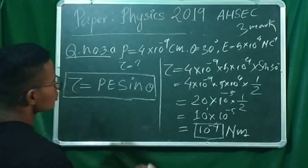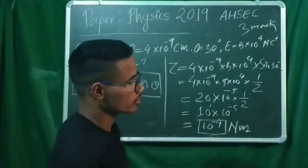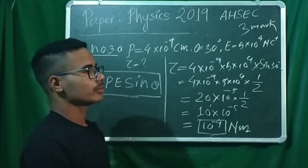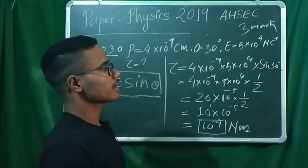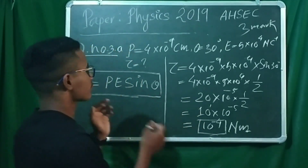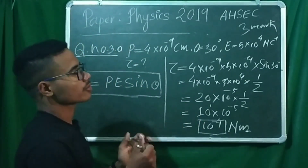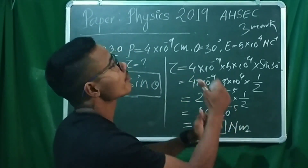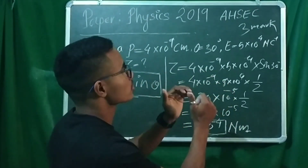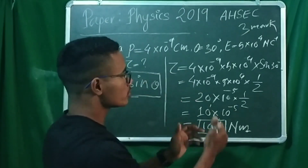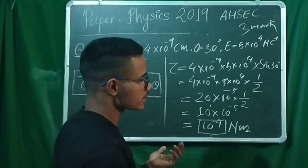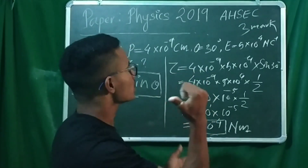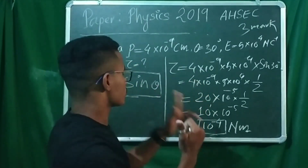What is the direction of torque? Using the right-hand rule on the x-y plane, the electric dipole is oriented along the x-axis. The torque direction is perpendicular to both the dipole moment and the electric field. By the right-hand rule, the torque direction is along the z-axis, i.e., in the direction perpendicular to the x-y plane.